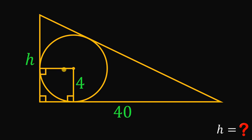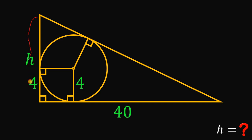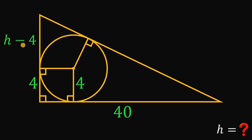We will do that again. Let's draw the radius of this circle directly to the tangent line, or the hypotenuse of this right triangle. Notice that we created a square right about here, so all of these sides must be equal to 4 units. The length of this side must equal h, and since this is 4, the other side must equal h minus 4.